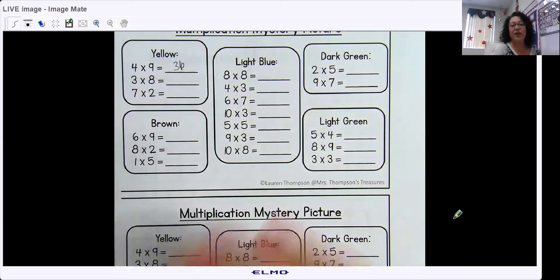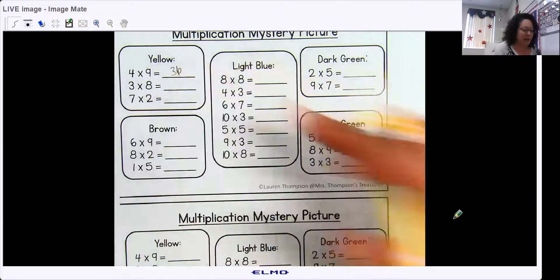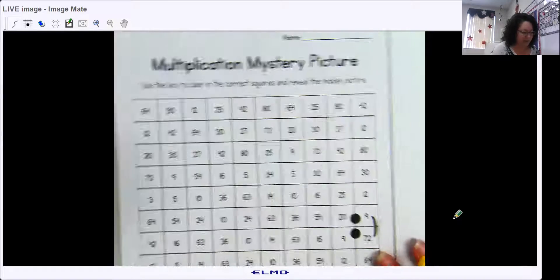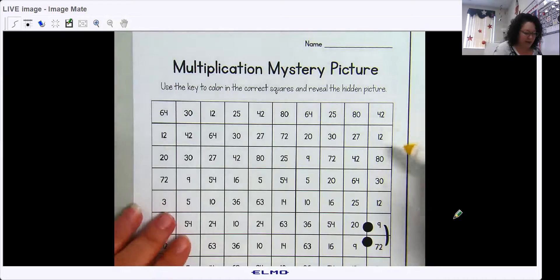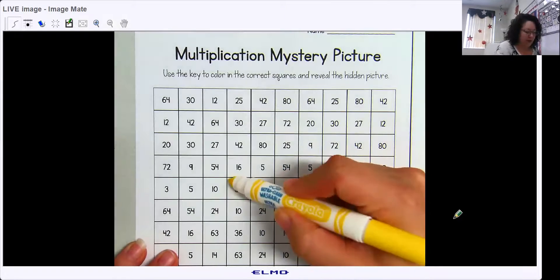And then I would solve all the problems first and then go back and color, crayon, marker, colored pencil, don't care. So any box that has 36 I'm going to color yellow. Where is a 36? Here's one. Here's another one.